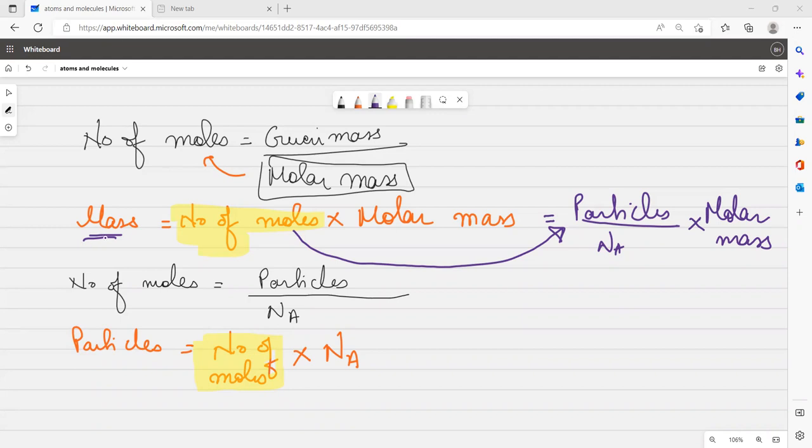But when you have to remove the mass, what will they do here? They will shift it here. So, mass could be equal to number of moles into molar mass.